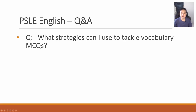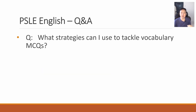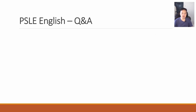What strategies can I use to tackle vocabulary MCQs? We don't always walk into the exam hall knowing 100% of the words in the exam paper, so it's only natural that some vocab MCQ options you have never seen before. One of the most effective strategies is to use contextual clues — read the surrounding text and sentences carefully, try to understand what is happening, and then think about what is the best word or phrase that suits the passage in that particular context.